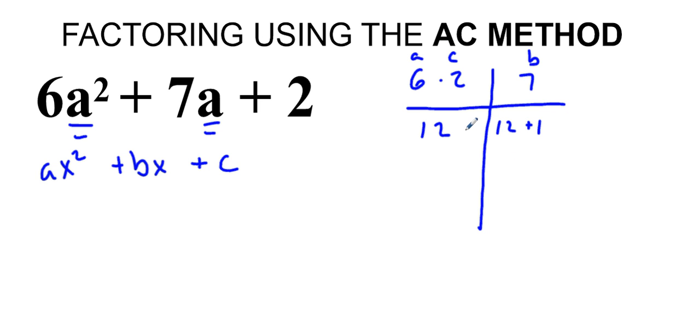Then we would go to the next one that will equal 12. What would be the next one? We have 6 times 2, so 6 plus 2 equals 8. That's not going to work out.